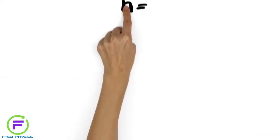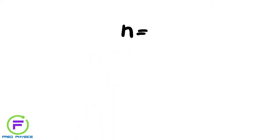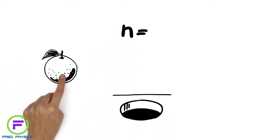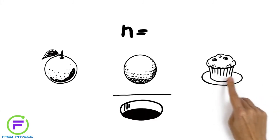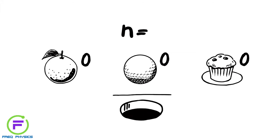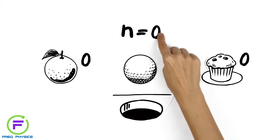One example of a topological invariant is the number of holes an object has. An orange, a ball, and a muffin all have zero holes, so they can all be assigned the topological invariant n equals zero.